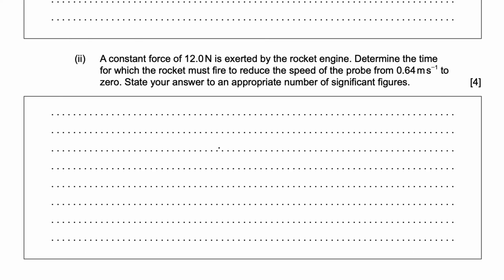C2. A constant force of 12 newtons is exerted by the rocket engine. Determine the time for which the rocket must fire to reduce the speed of the probe from 0.64 meter per second to zero. State your answer to an appropriate number of significant figures. We can solve this question using the impulse formula. J = FΔt. This is given in the data booklet. We know that impulse is nothing but the change in momentum given by Δp. It's equal to FΔt.